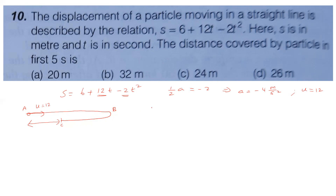To find when velocity is zero, differentiate s: velocity equals 12 minus 4t. Setting velocity equal to 0: 4t equals 12, so t equals 3 seconds. The particle reaches point B at t equals 3 seconds, then returns. Distance S1 (A to B, t equals 3 seconds) equals 6 plus 12 into 3 minus 2 into 9 minus 6 equals 36 minus 18 equals 18 meter.